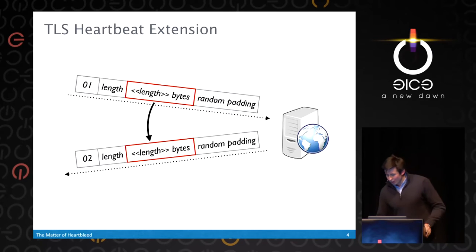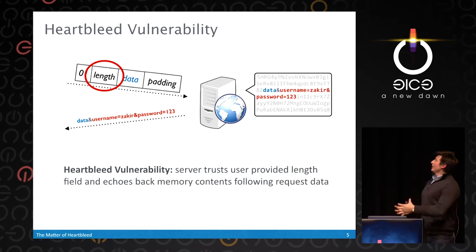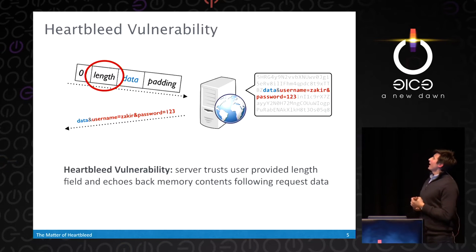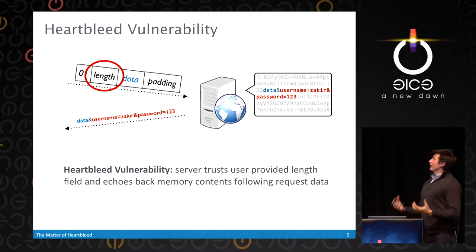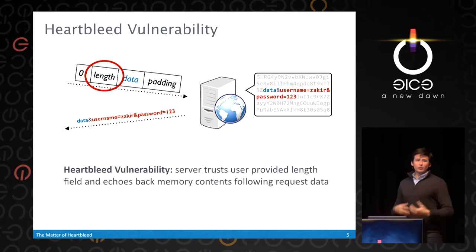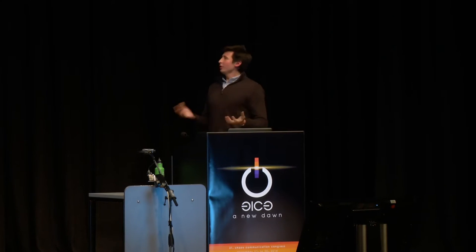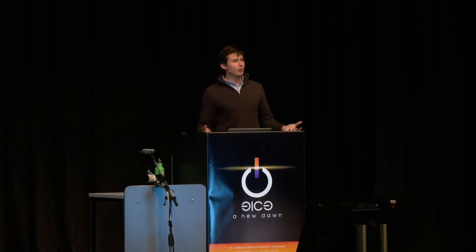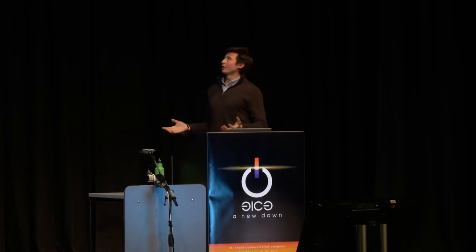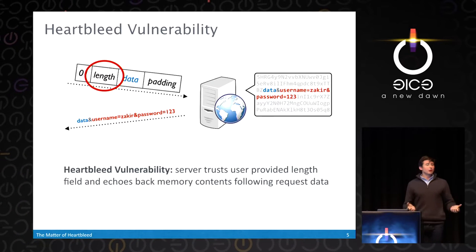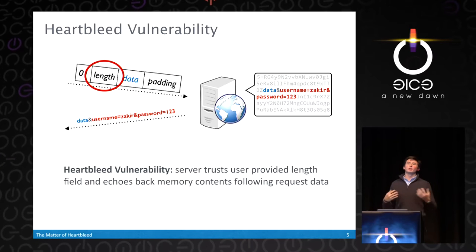The bug existed in that both a length header and a set amount of data were sent, and in OpenSSL, we trusted the length header. We would echo back that amount of information from memory, regardless of how much data had actually been specified. So if I sent you four bytes of data but told you I sent eight bytes, you would echo back eight bytes. If those extra four bytes happened to be my username and password, you would happily echo those back to the client. Any piece of information up to 2^16 bytes after that data could be echoed back — logging credentials, a key, anything.